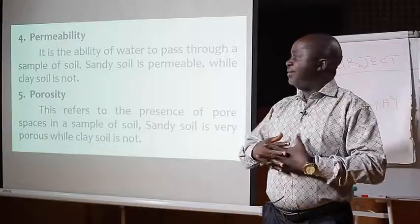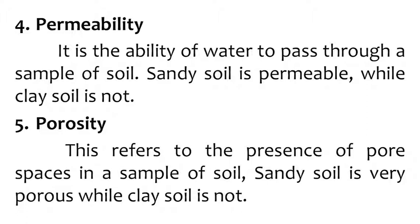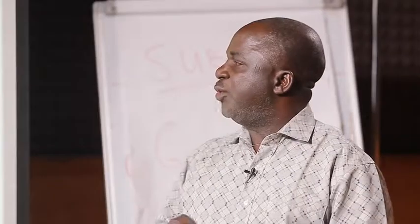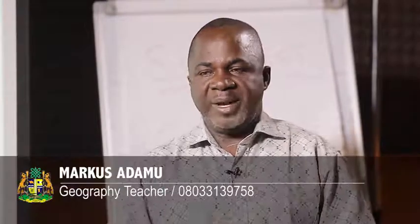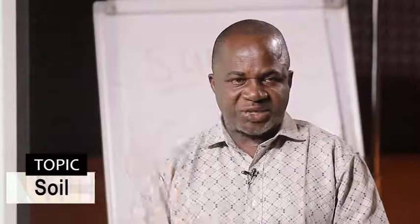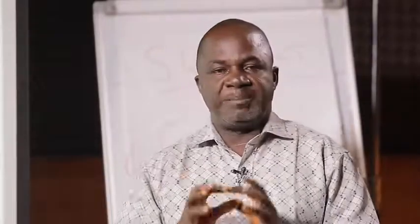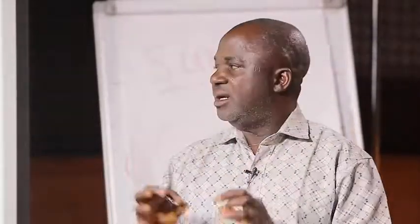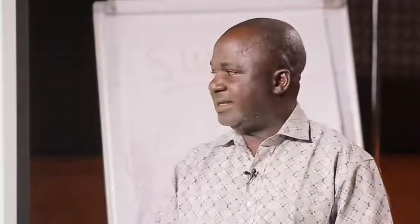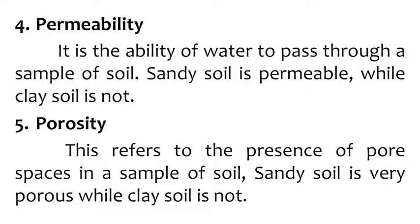Number four, we have permeability — the ability of water to pass through a sample of soil. Sandy soil is permeable, meaning it allows a lot of water to pass through it and move downward; that is percolation. Clay soil, because of its tiny spaces, does not allow water to pass through easily. Five, porosity refers to the presence of pore spaces in a sample of soil. Sandy soil is very porous, while clay soil is not.